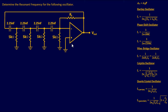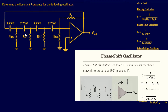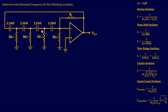For the first example, we want to determine the resonant frequency. This oscillator resembles a phase shift oscillator with a slight twist — instead of three RC circuit sets, it has four sets (each pair is considered one set). Since we have an extra set, we won't use the typical equation from most textbooks. We'll use the modified equation that accounts for n sets. Let's log what we know: C = 2.25 nanofarads and R = 5 kilohms.